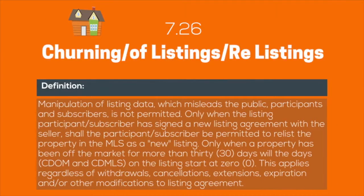Section 7.26 of the MLS rules, churning of listings and relistings, states: manipulation of listing data, which misleads the public, participants, and subscribers, is not permitted. Only when the listing participant or subscriber has signed a new listing agreement with the seller shall the participant or subscriber be permitted to relist the property in the MLS as a new listing.